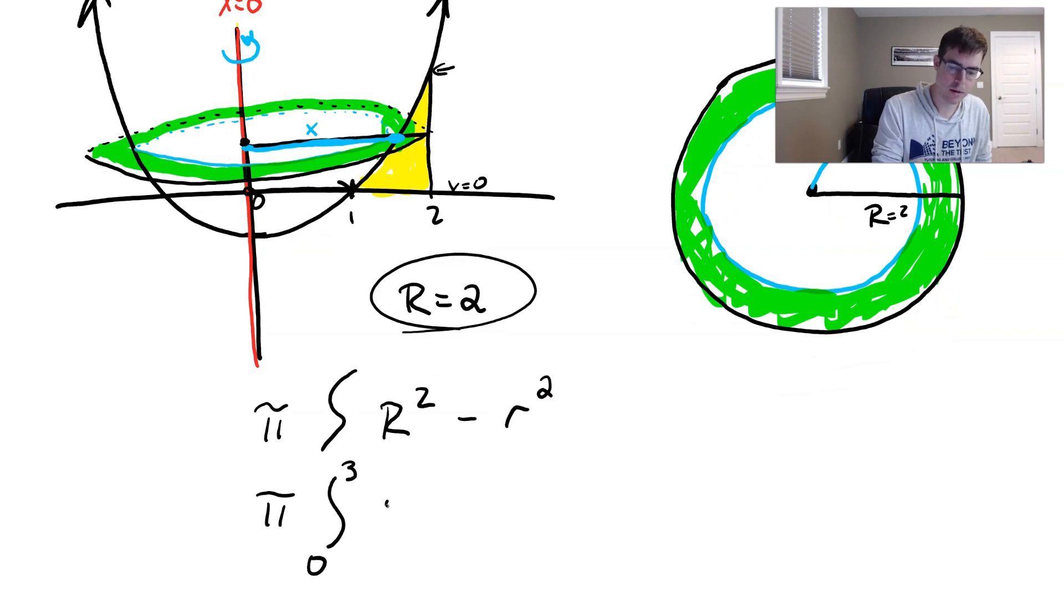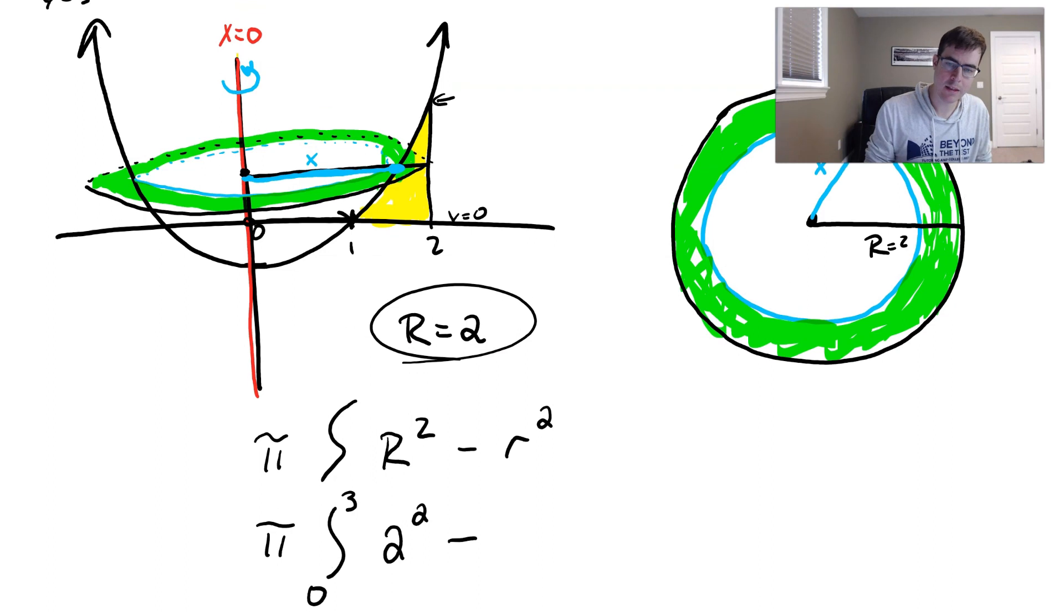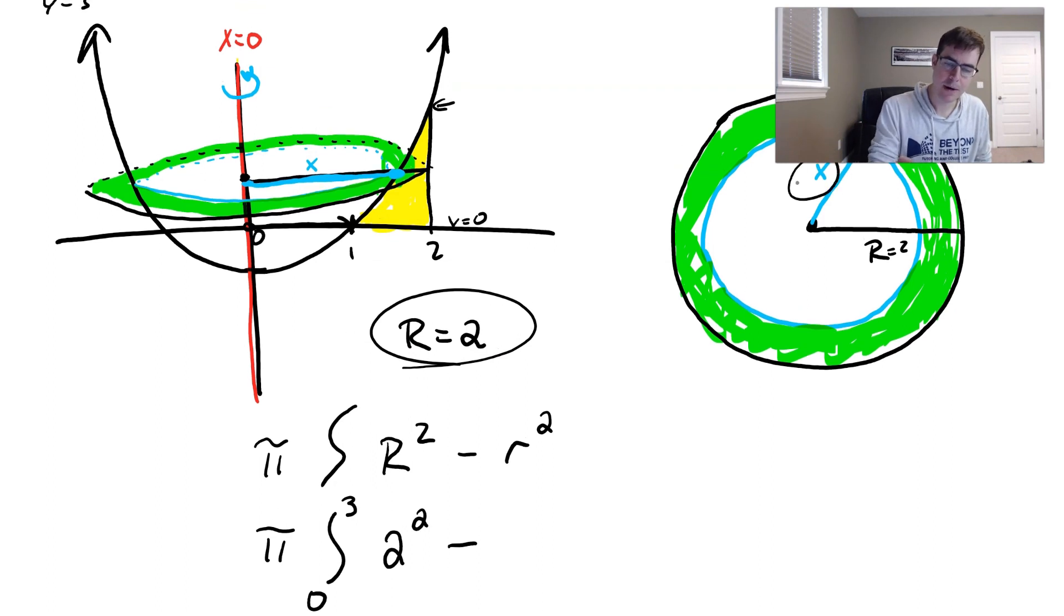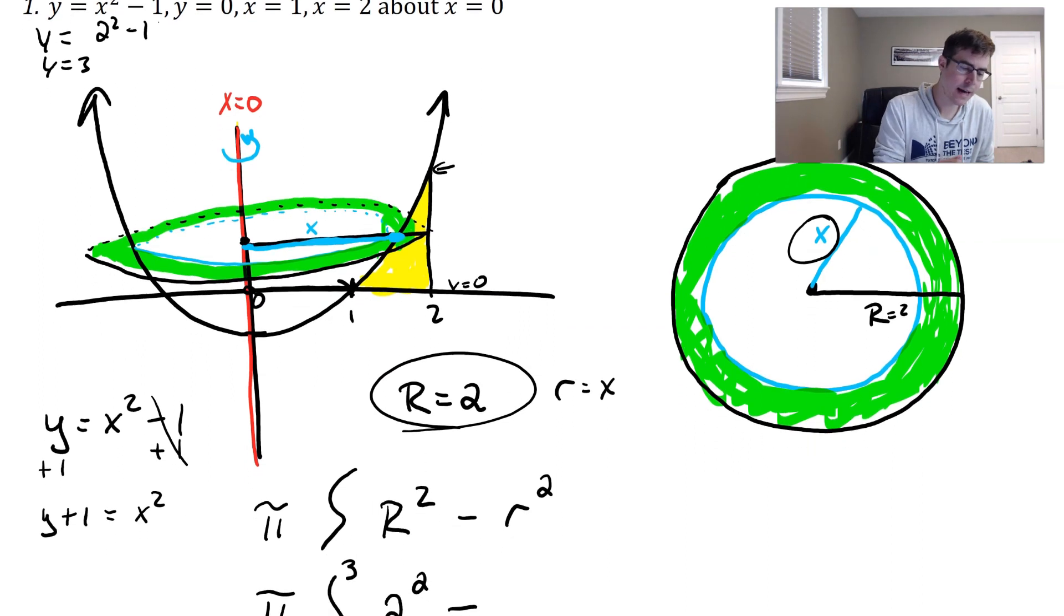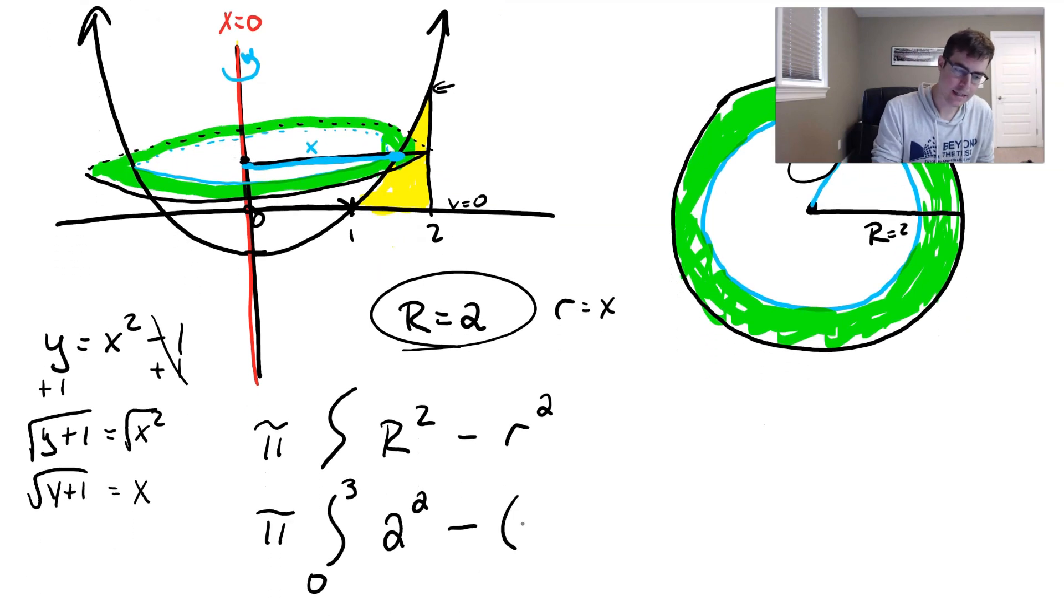The big R we said was two, so that's just two squared minus, now the little r is X. But I don't want to just put X because we need this in terms of Y. Well, here's what I know. I know that Y is equal to X squared minus one. So I can solve this, just add one to this side, add one, we get Y plus one equals X squared. And then if I actually just go ahead and take the square root of both sides, we get that X is the square root of Y plus one. So we get X is the square root of Y plus one, that whole thing, squared.